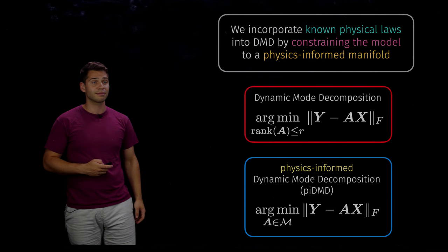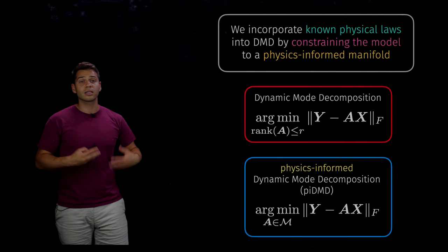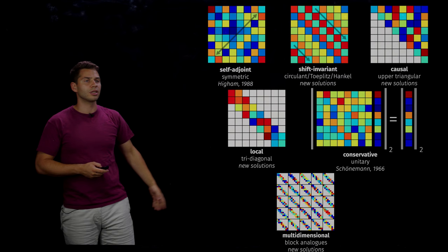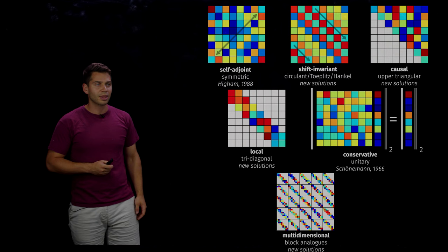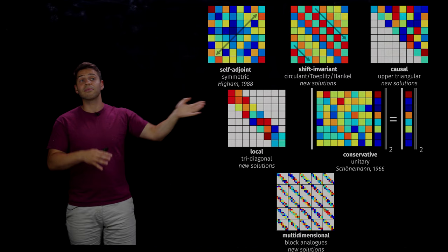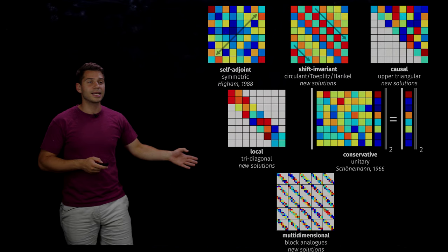Many of these problems can be solved in closed form using standard linear algebra objects like an SVD, polar decomposition, or QR decomposition. On the corresponding slide I've illustrated the physical structure — such as self-adjointness — the matrix structure, and the solution to that optimization problem. In a few places the solutions are new, so we've generated novel solutions to these optimization problems.